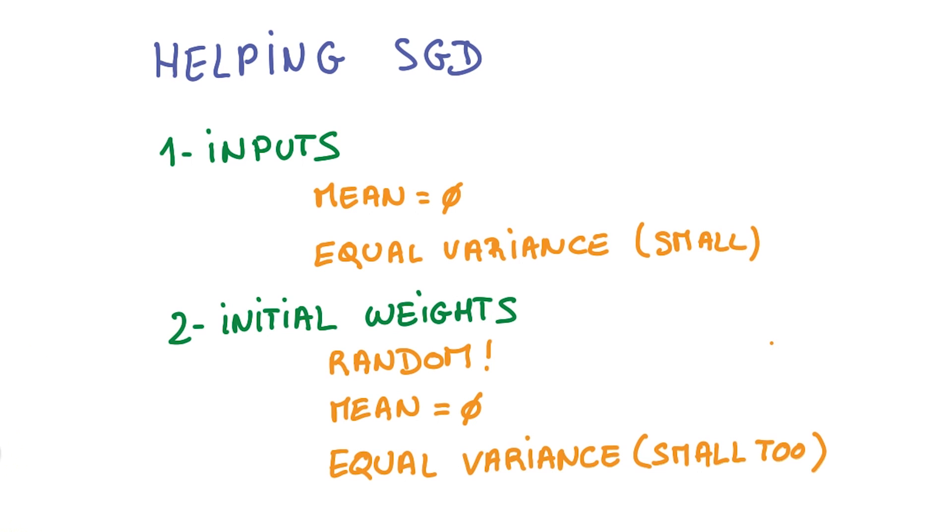I also told you to initialize with random weights that have relatively small variance, same thing. I'm going to talk about a few more of those important tricks. And that should cover all you really need to worry about to implement SGD.